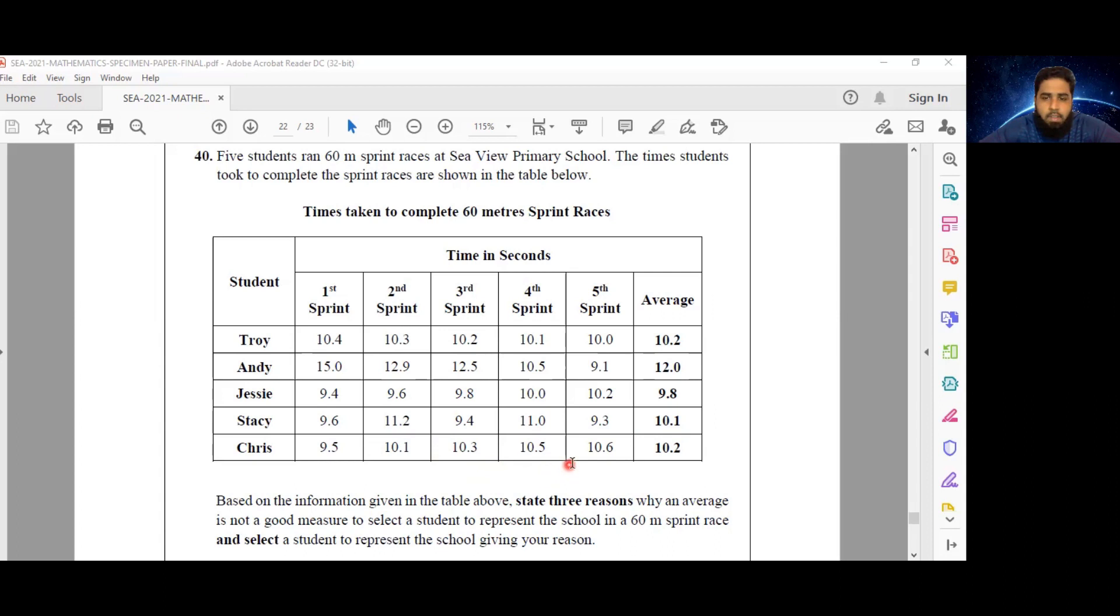Therefore, he is running a worse 60-meter sprint than he was at the start. His last race is 1.1 seconds longer than his initial sprint.